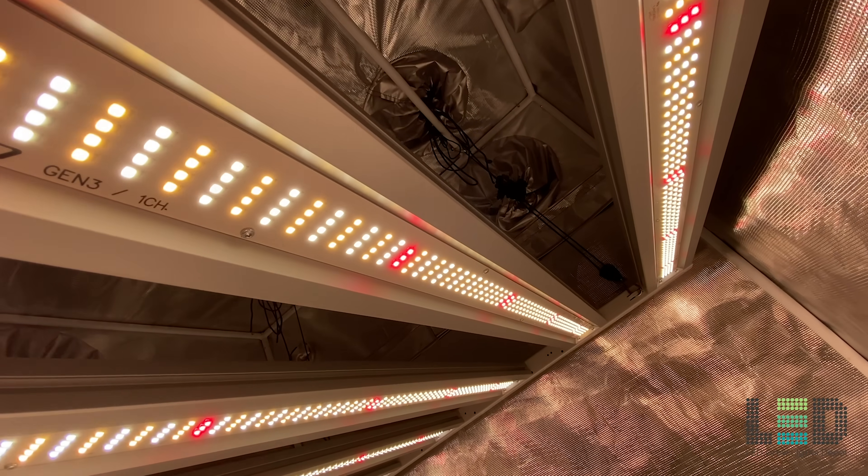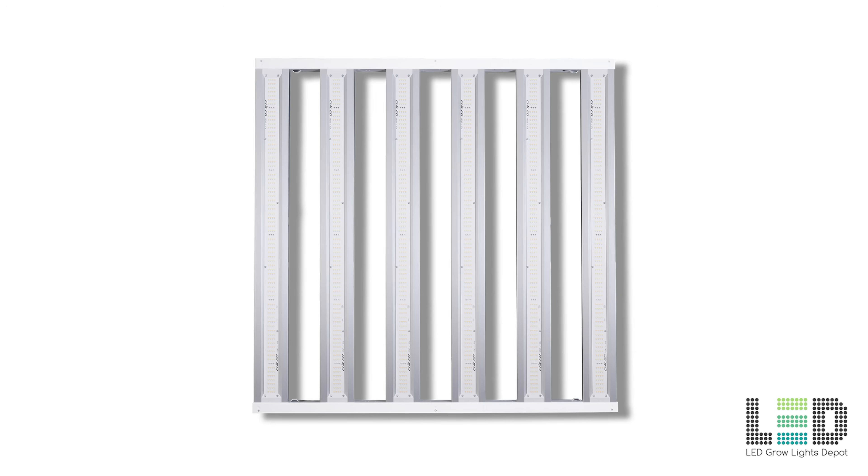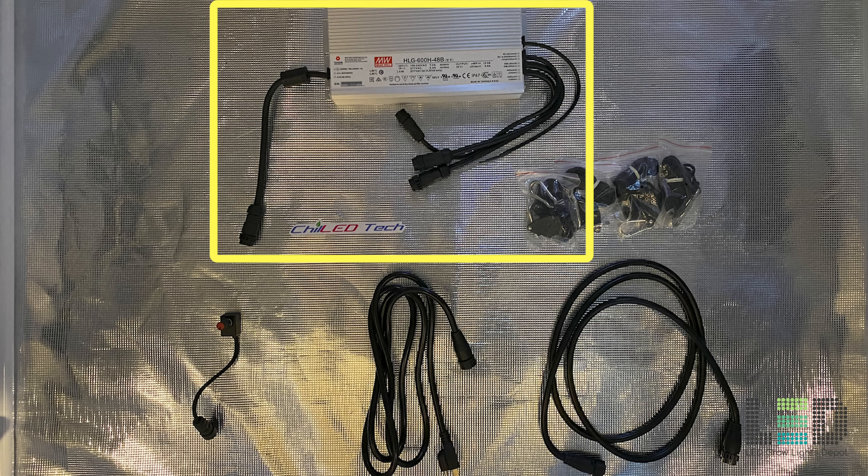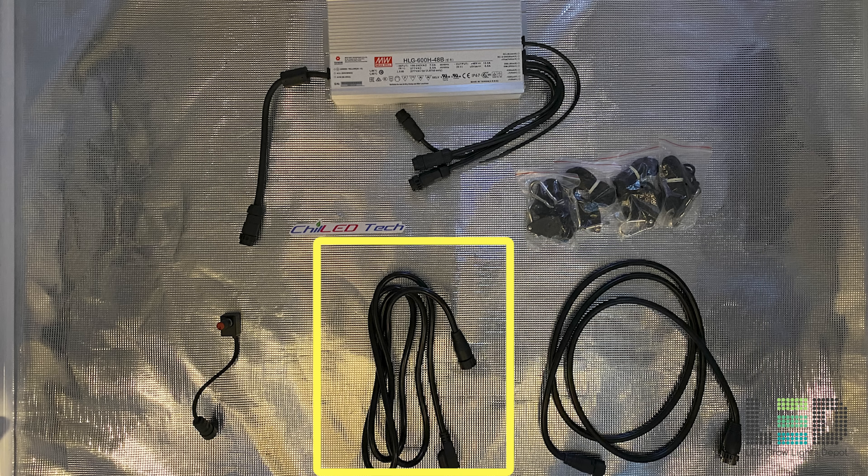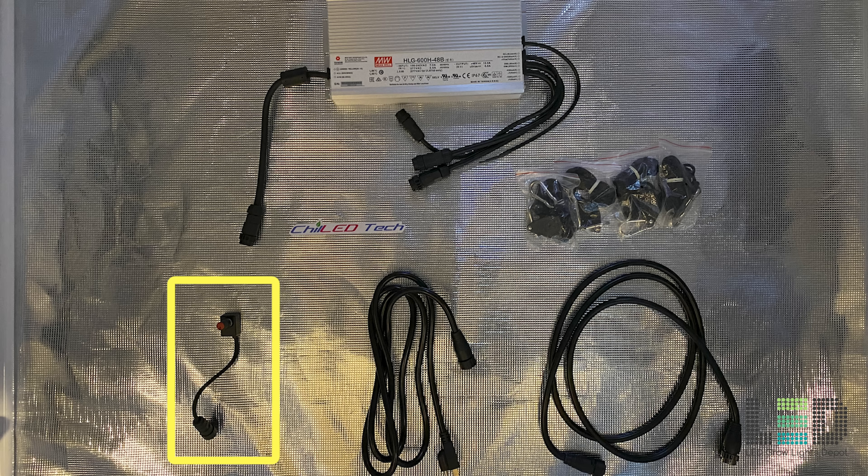The fixture comes with the following components: one fully assembled fixture, one push lock Meanwell HLG 600H 48B LED driver, one push lock 7 foot driver extension cable, one 6.5 foot push lock AC power cord, one push lock dimmer pot, and two 3/16th inch rope ratchet 2 pack hangers.